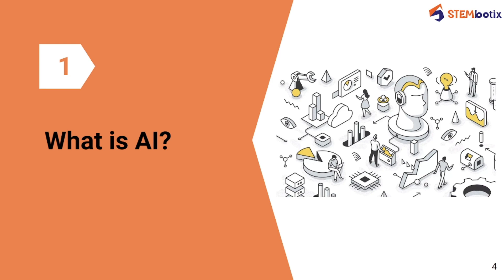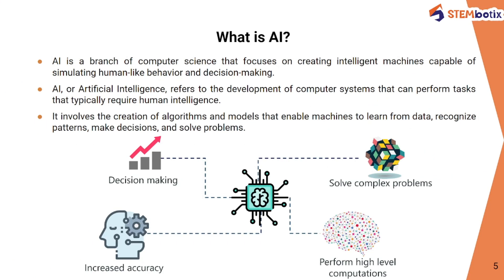Tech tycoon Elon Musk once quoted that artificial intelligence is a fundamental risk to the existence of human civilization. Whether AI is a threat or not is debatable, so please share your thoughts in the comments. So first of all, what is AI? AI is a branch of computer science that focuses on creating intelligent machines which are capable of simulating human-like behavior and decision making.